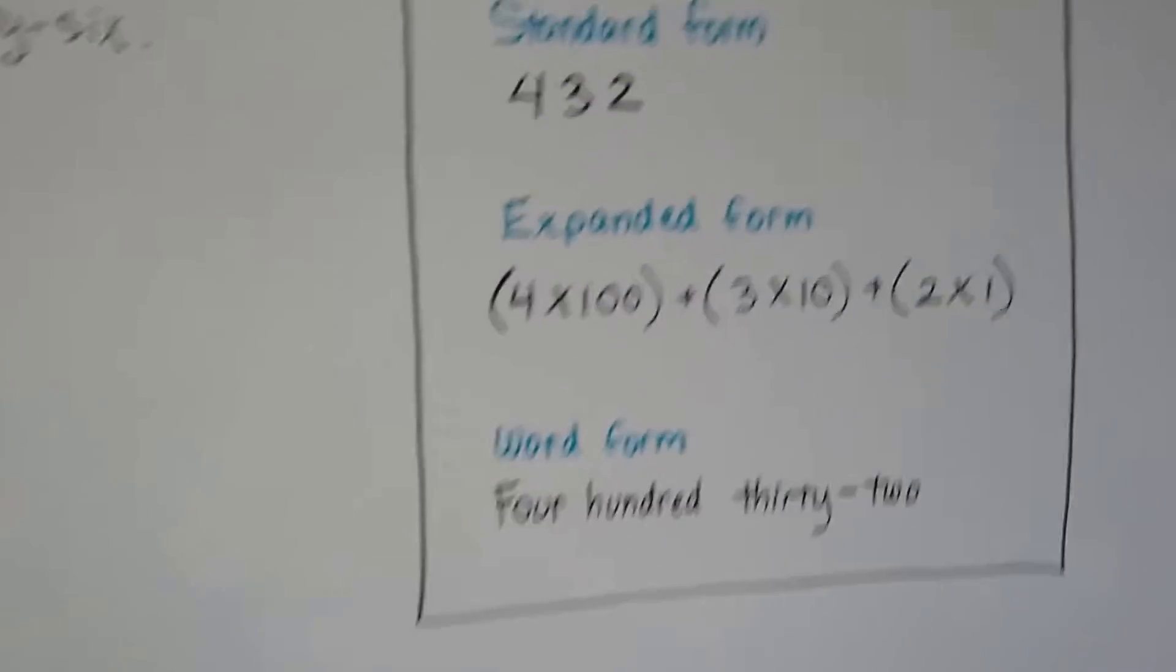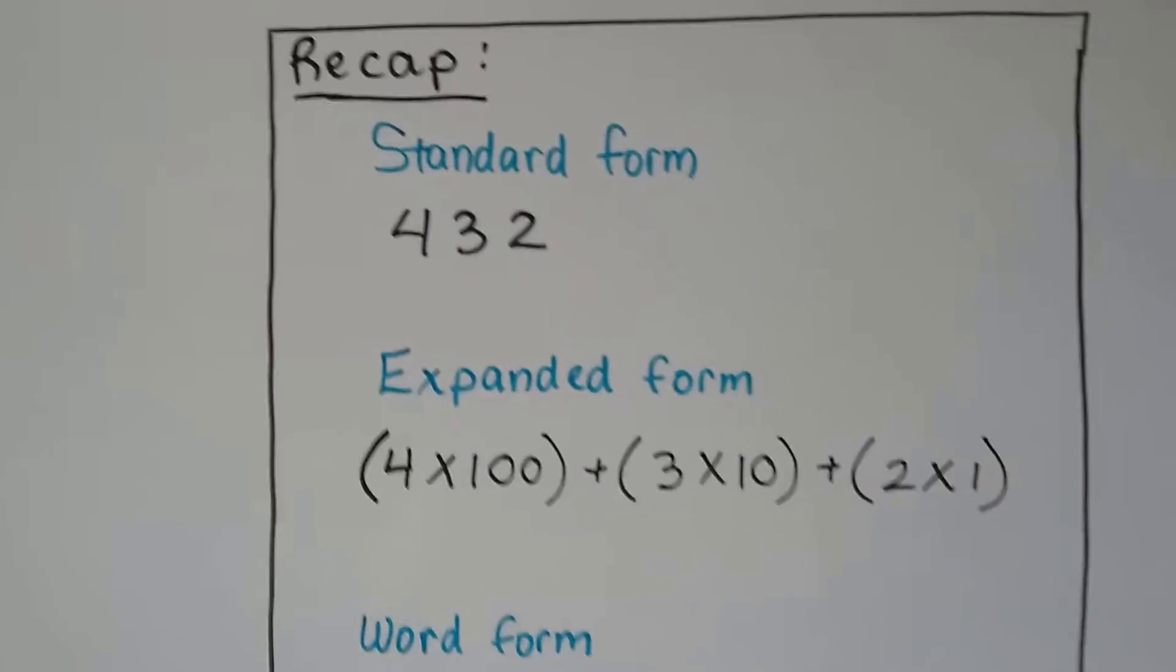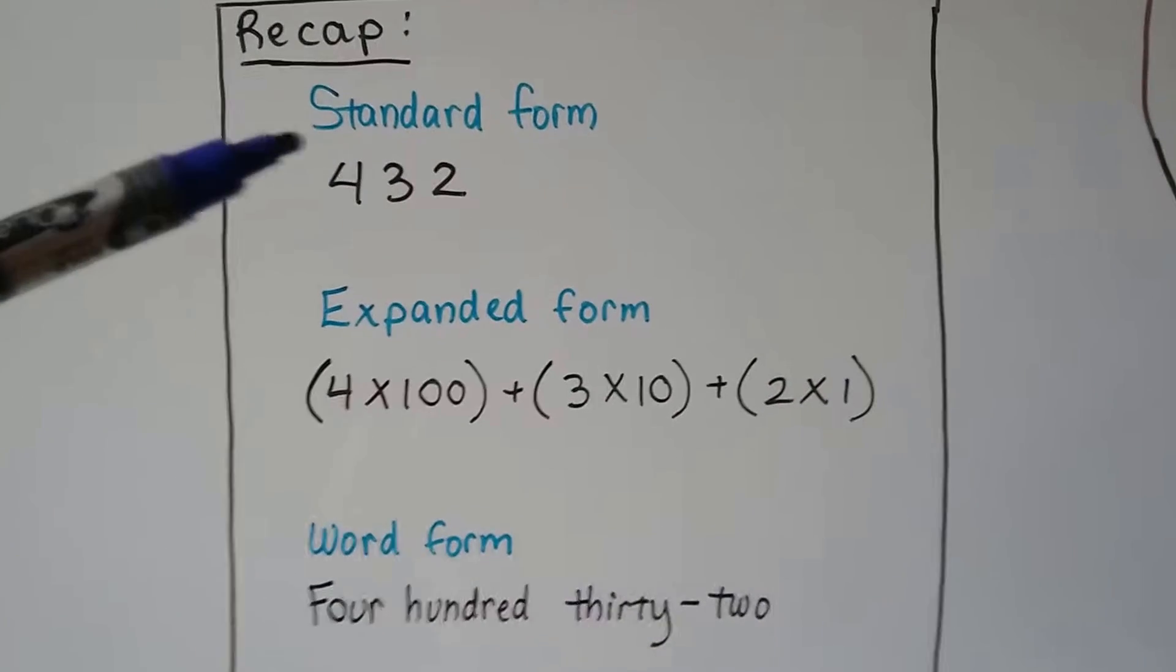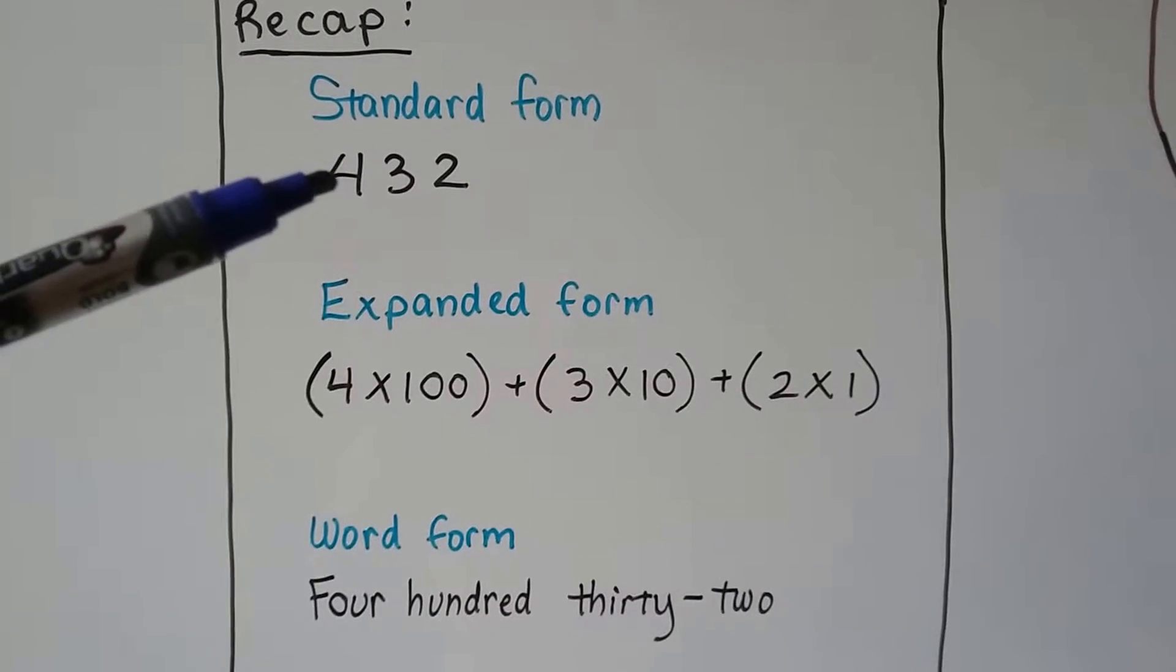So that's word form. And to recap what we learned in the previous video, we talked about standard form. That's just the way we write the number, four hundred thirty-two.